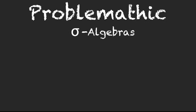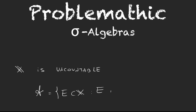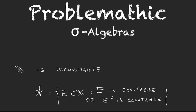Now let's work with an example that's a bit more sophisticated than the one we saw in the last video. We're going to grab a set X that is uncountable, and define this other collection A. This collection A is going to grab all subsets of X for which the set itself is countable or its complement is countable.